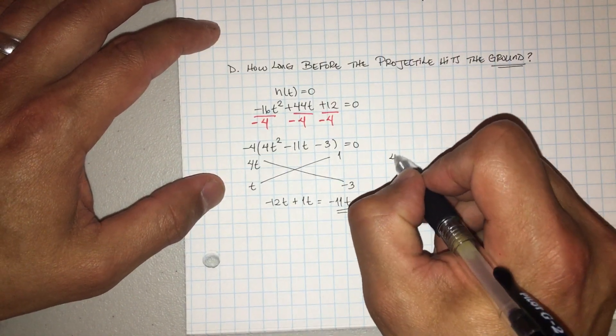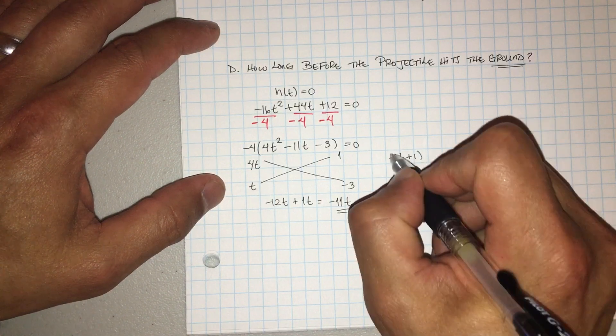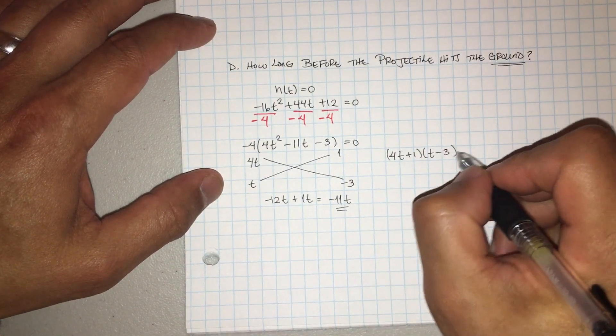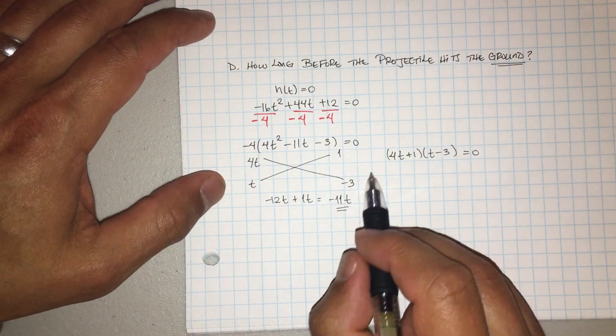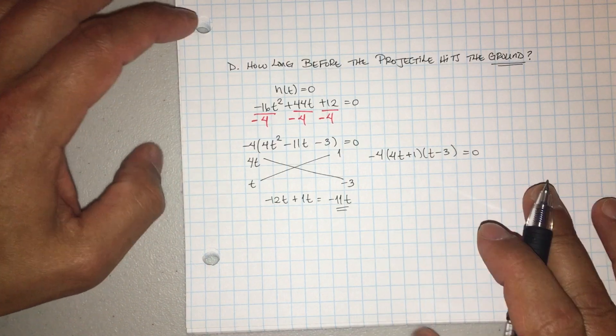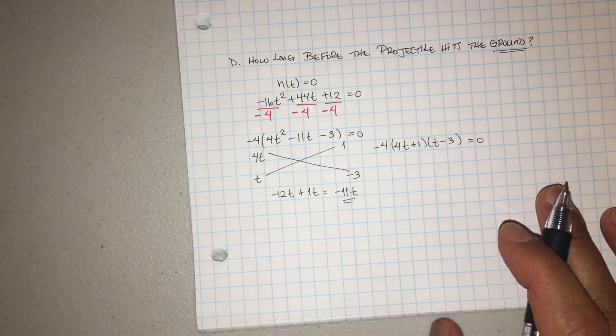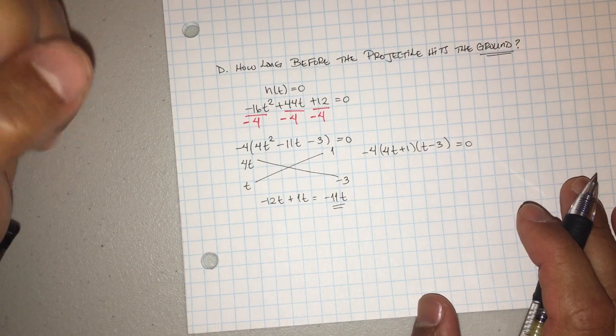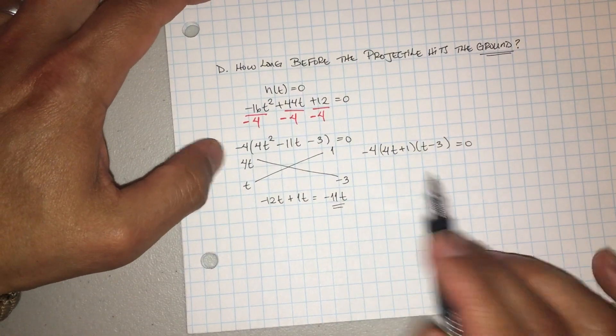Okay, so now what do you do? These are my factors. So los factores son cuatro t más uno y t menos tres. So now you're going to set that equal to zero. Now of course, the negative four is on the other side. El negativo cuatro todavía está fuera, pero es un valor de multiplicación. No vas a cambiar la respuesta del tiempo.